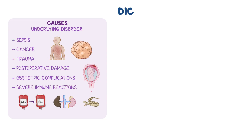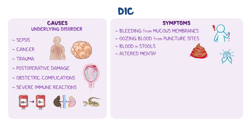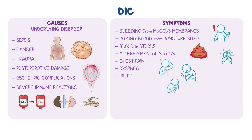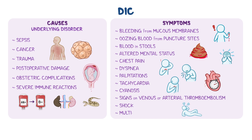Once the underlying cause triggers the clotting cascade, symptoms of clotting or bleeding may manifest, including bleeding from mucous membranes, oozing blood from puncture sites, blood in stools, altered mental status, chest pain, dyspnea, palpitations, tachycardia, cyanosis, or signs of a venous or arterial thromboembolism, shock, or multi-organ failure.